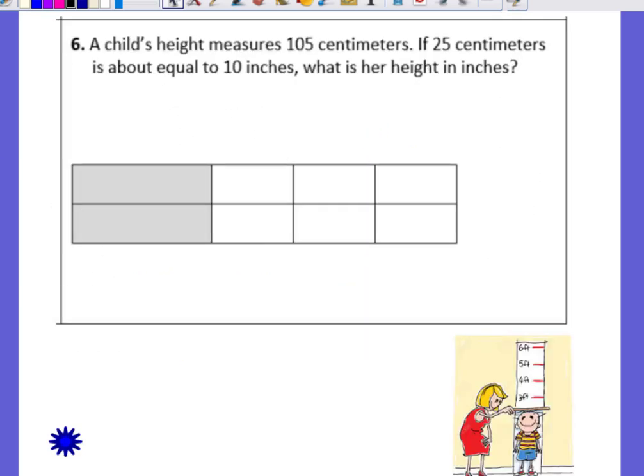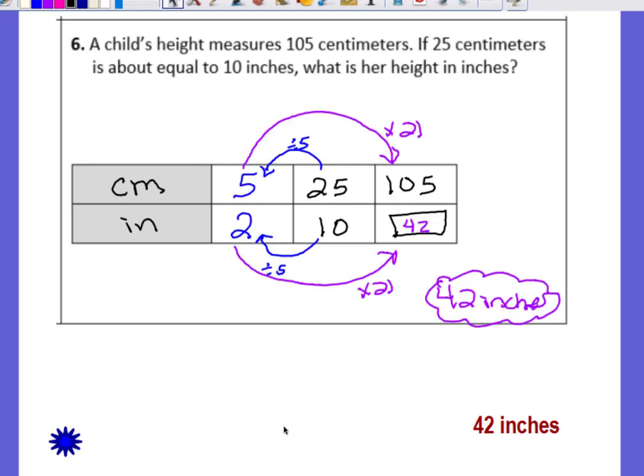And our last example. A child's height measures 105 centimeters. If 25 centimeters is about equal to 10 inches, what is her height in inches? So pause the video. Set up your ratio table. Solve. Come back and check your answer. Did you get 42 inches? If you did, awesome. If not, pause the video. See if you can find your mistake. If you have any questions let your teacher know. And that's all the practice for ratio tables. Nice job Bobcats.